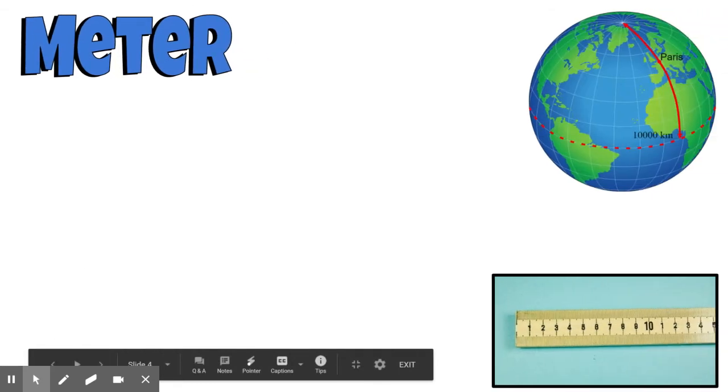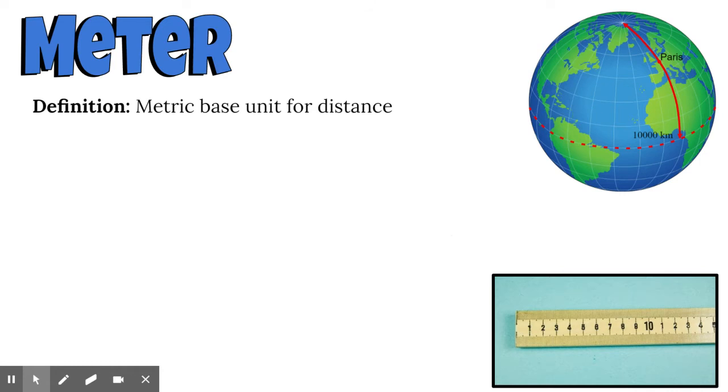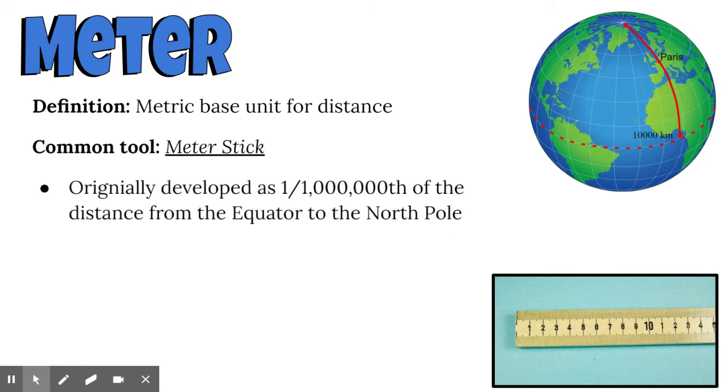When we talk about the meter, we're talking about a unit. The meter is the metric base unit for distance. The way they came up with the meter is kind of interesting. They took the distance from the equator to the North Pole and divided it by one millionth. It's one one-millionth of the distance from the equator to the North Pole.